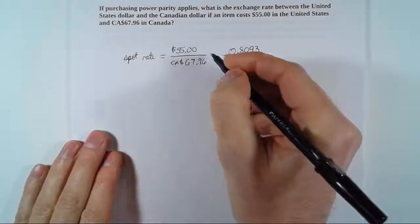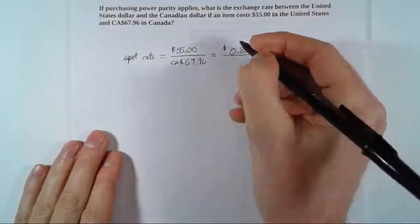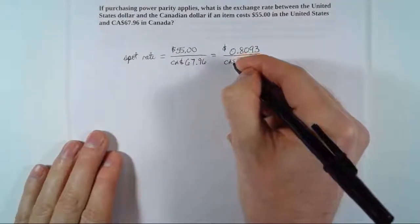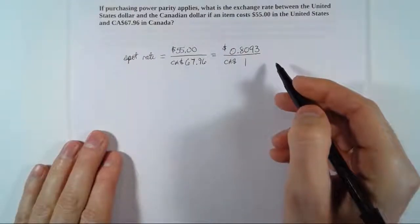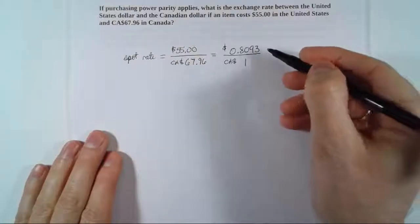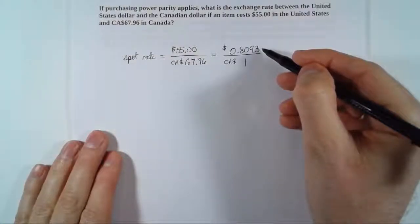And if we hang on to our units, then that would be US dollars per Canadian dollar. So that would mean that if purchasing power parity applies, then the exchange rate between the US dollar and the Canadian dollar is 0.8093 US dollars for every Canadian dollar.